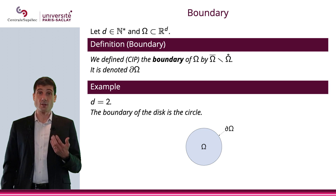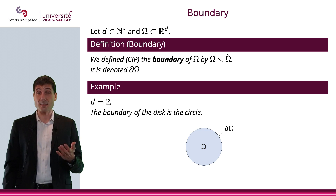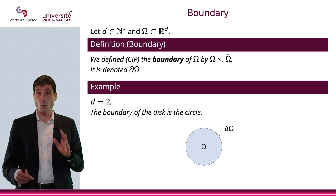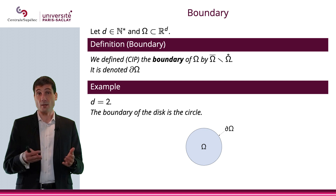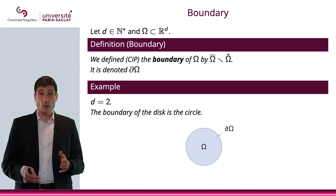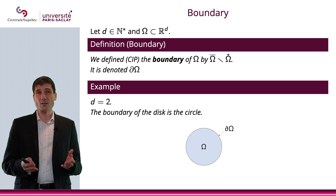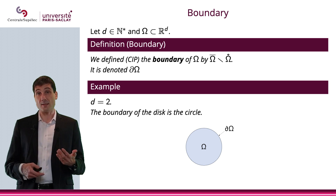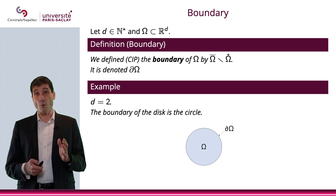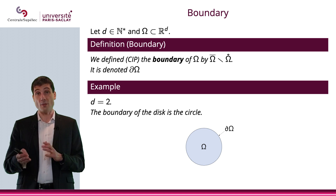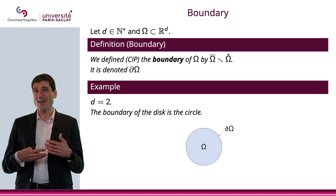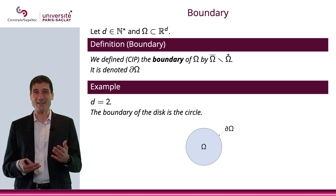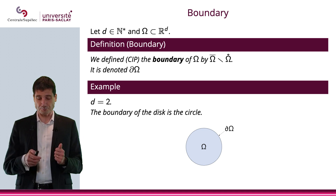If you consider a two-dimensional object such as a disk, its boundary will be the circle. So obviously the boundary is something very easy to understand. Of course, we can have some complicated sets for which the boundary is somehow quite complicated or even counterintuitive.